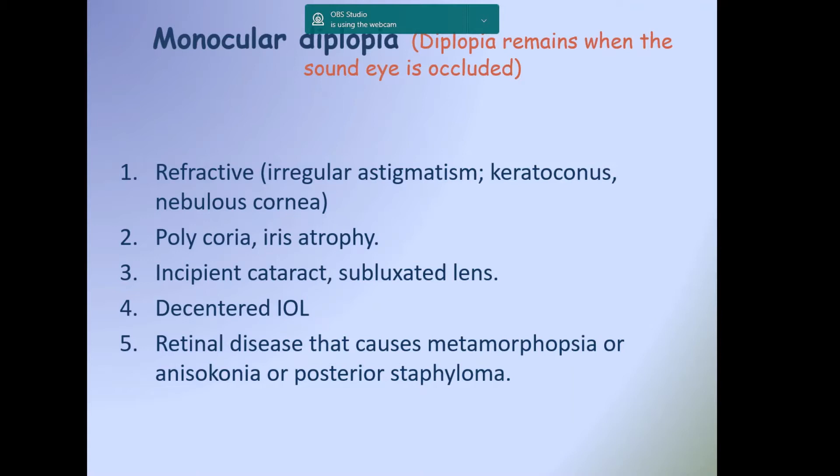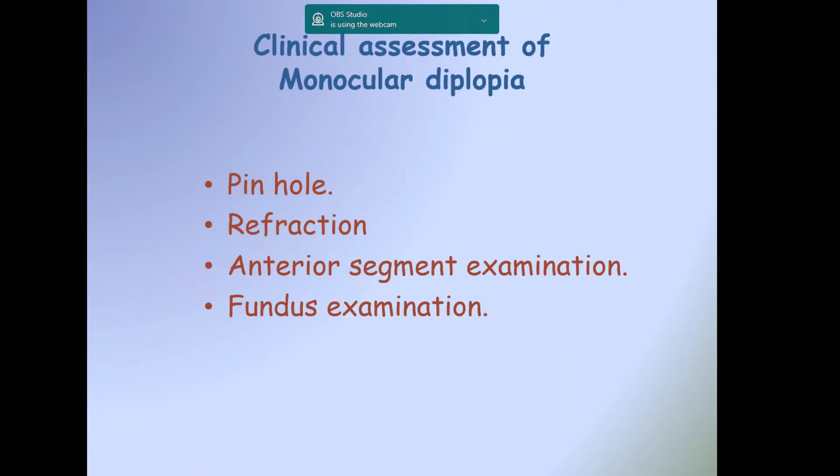Causes of monocular diplopia are refractive irregular astigmatism, keratoconus, nebulous cornea, polycoria, iris atrophy, incipient cataract, subluxated lens, decentered IOL, and retinal diseases that cause metamorphopsia, anisoconia, or posterior staphyloma. Clinical assessment should include pinhole test to override irregular astigmatism and nebulous cornea, refraction, and thorough examination of anterior segment and fundus.